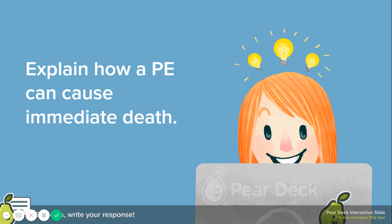To explain how a PE can cause immediate death: a blood clot blocks the flow of blood into the pulmonary artery, so blood cannot reach the lungs for gas exchange. If blood doesn't get to the lungs, it doesn't return to the heart. If it doesn't return to the heart, it can't be pumped to general circulation. The body goes into shock and the individual dies — flow has been stopped at a location everything must pass through.